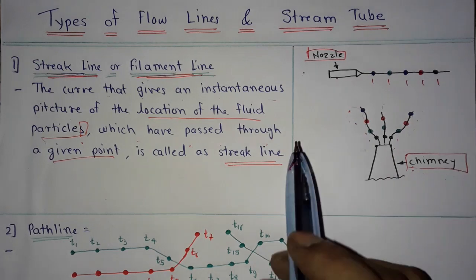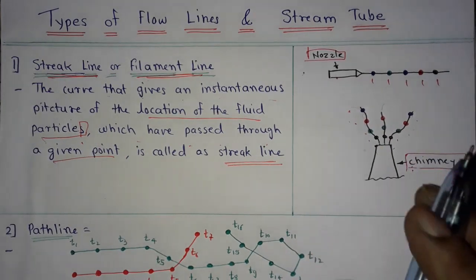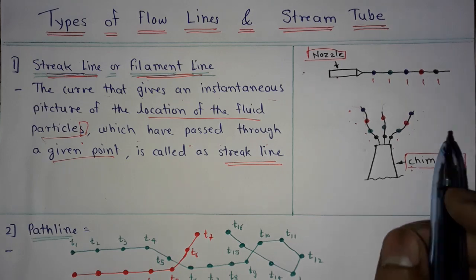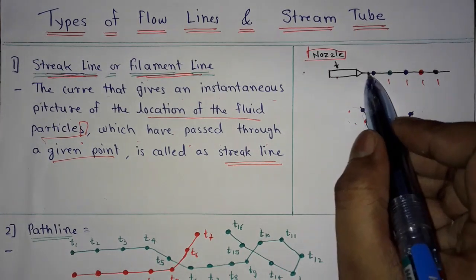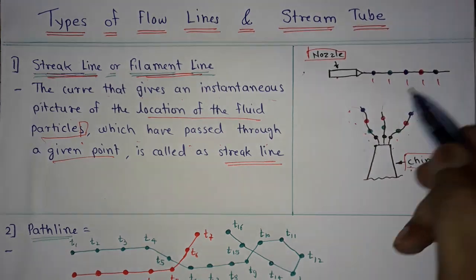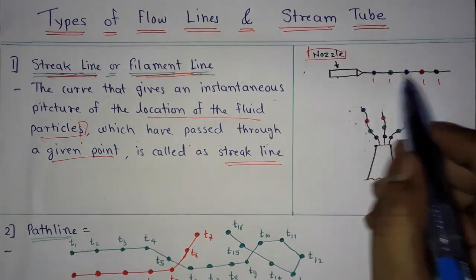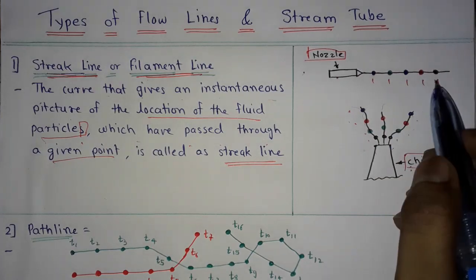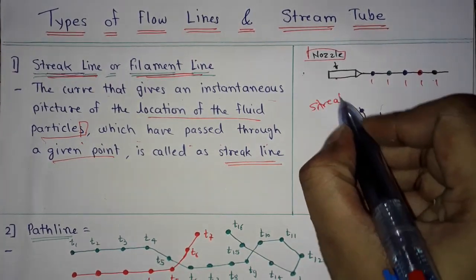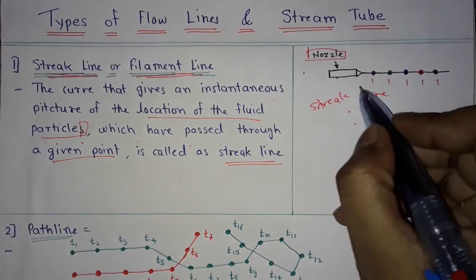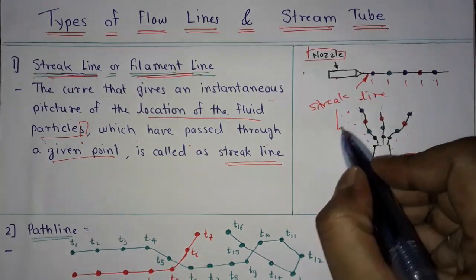In both examples, the path followed by the smoke particles is illustrated by a line. These lines, curves, or paths are called streak lines or filament lines.